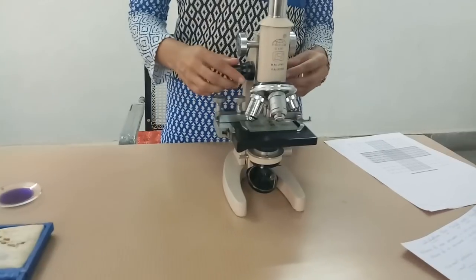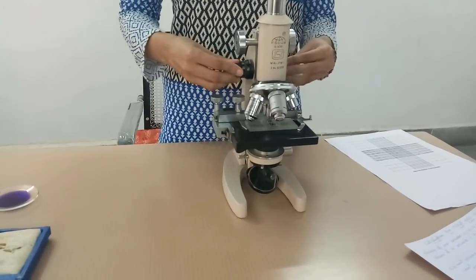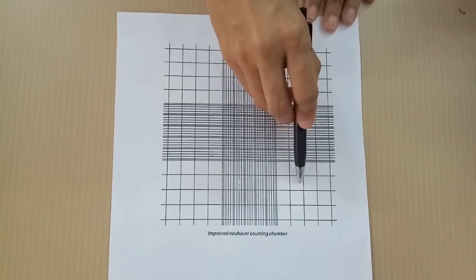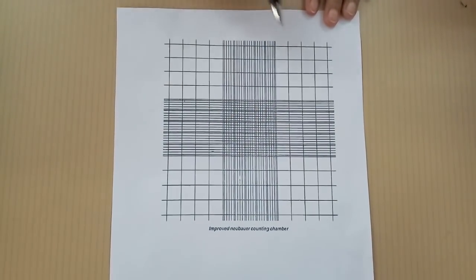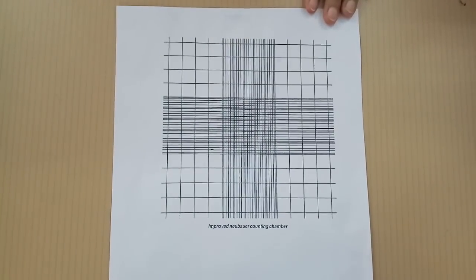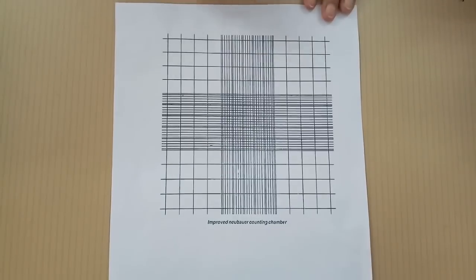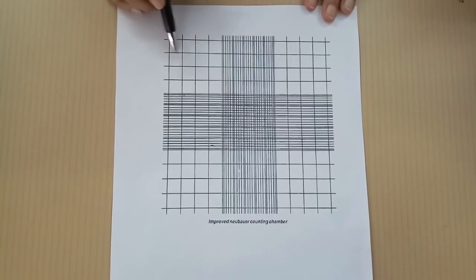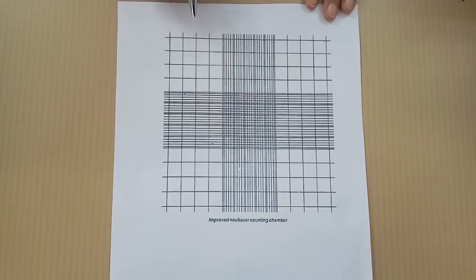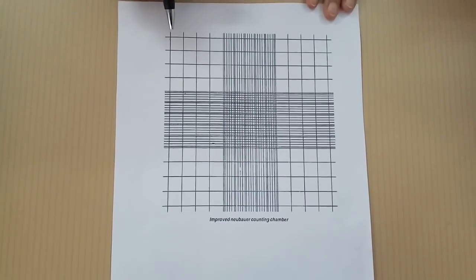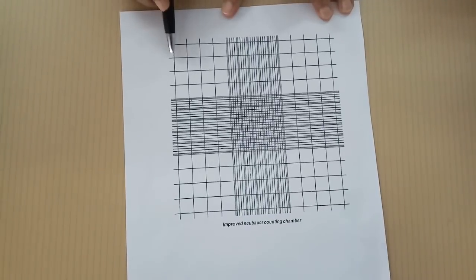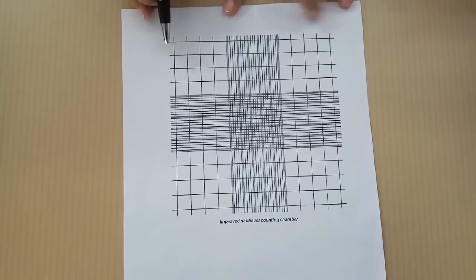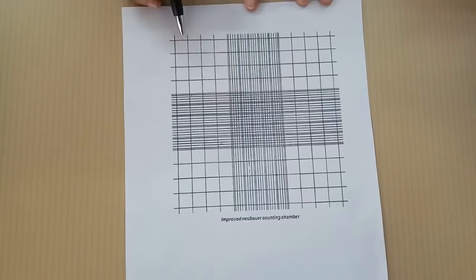Use fine adjustment again and try to identify WBCs. Counting the cells: count the cells in 4 groups of 16 squares each, total 64 squares. We are counting in low power. So this is the view of improved Neubauer chamber in low power. To avoid counting the same cells again, follow the rule of counting using L pattern counting. Count the WBCs present in the square and those on its left and lower line. You can see here inside the square and in the left and lower line, and ignore the WBCs present on right and upper line.